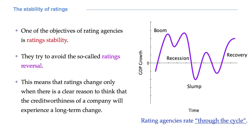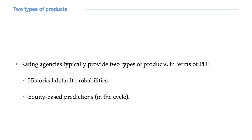This is a major difference with default models, but we will come back to this later on. Rating agencies essentially provide two types of products in terms of PD: historical default probabilities, and equity-based predictions. This week we will consider the first ones. Equity-based predictions, such as those of Moody's KMV model, will be discussed next week.